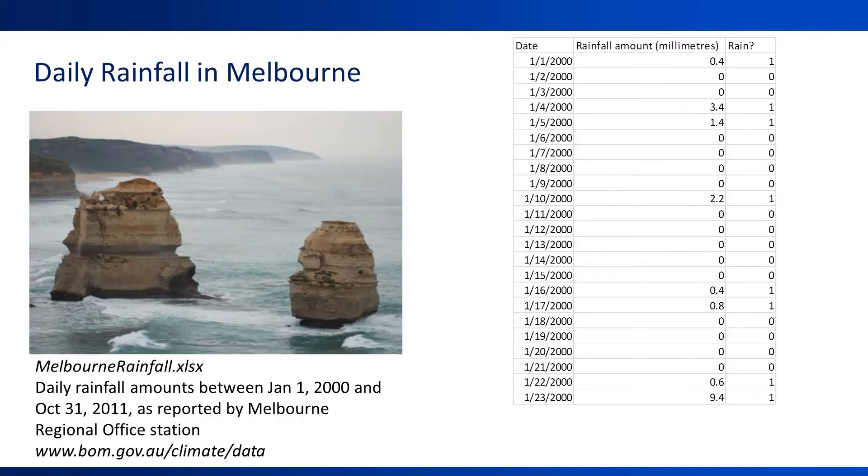Let us return to the Melbourne rainfall example that we introduced earlier. Suppose again that our goal is to create next day forecasts of the binary outcome, rain or no rain. Our original data include the actual amount of daily rainfall, and we've created a new derived binary variable that takes on the value 1 if it rained on that day, and 0 if not.